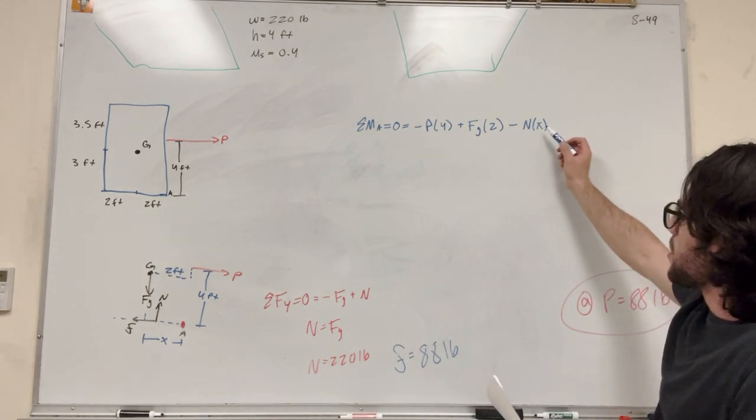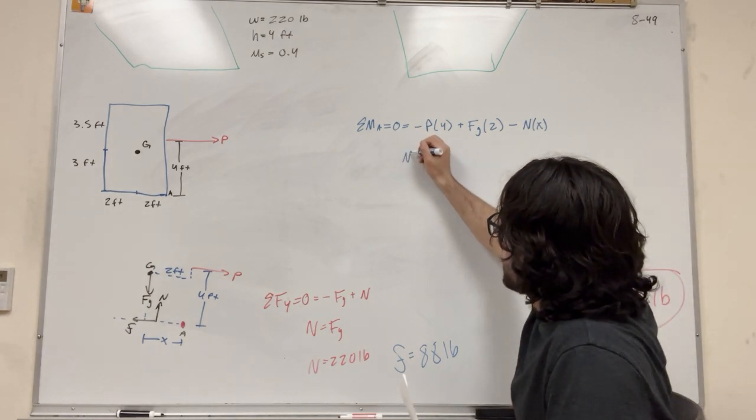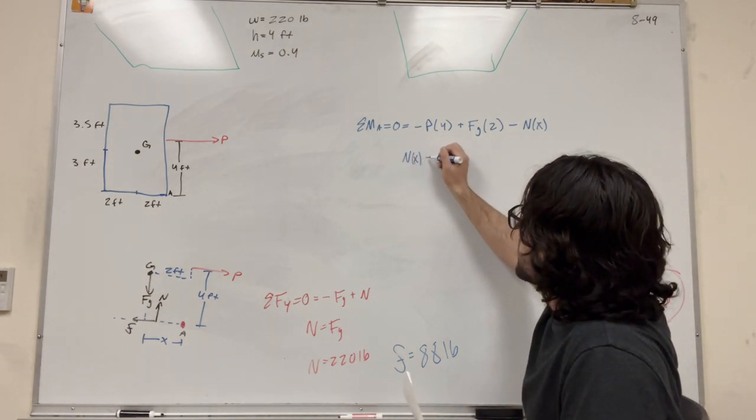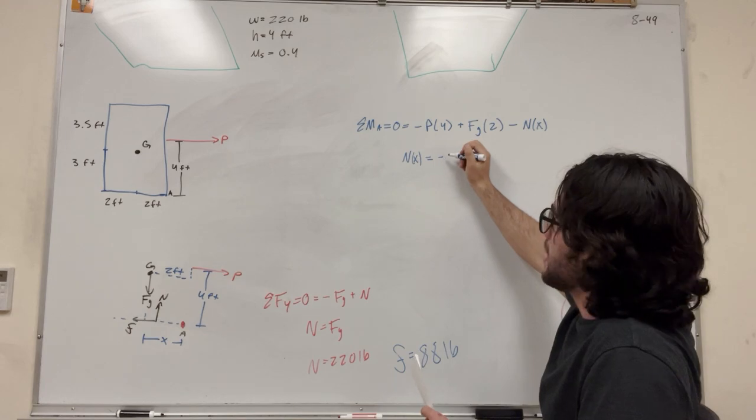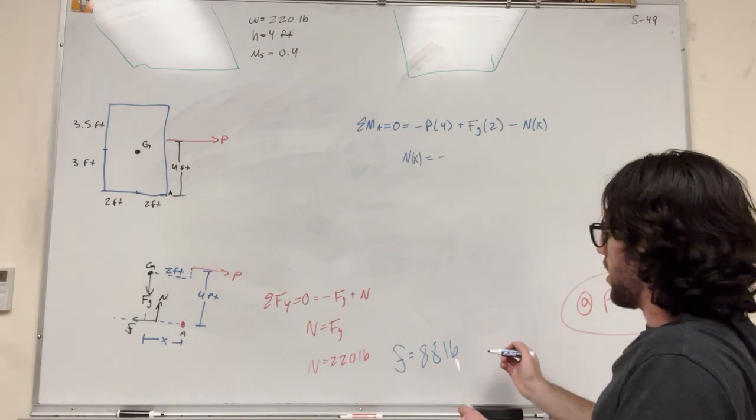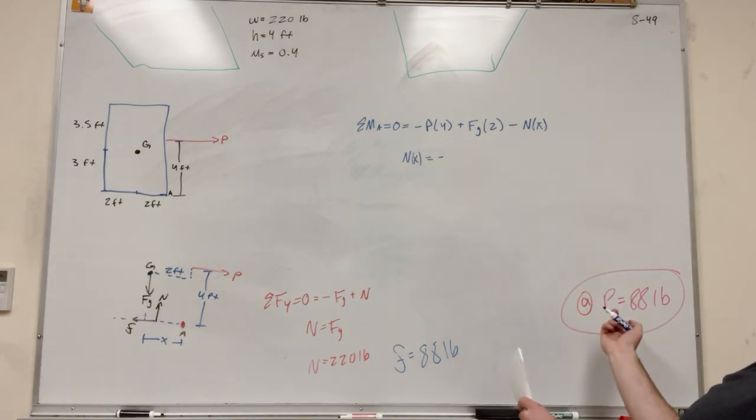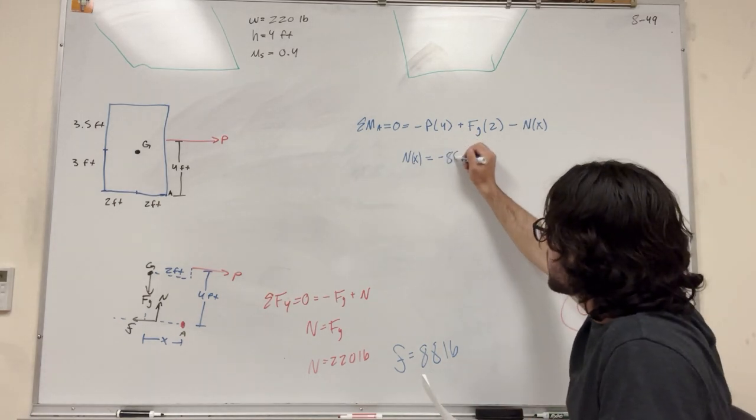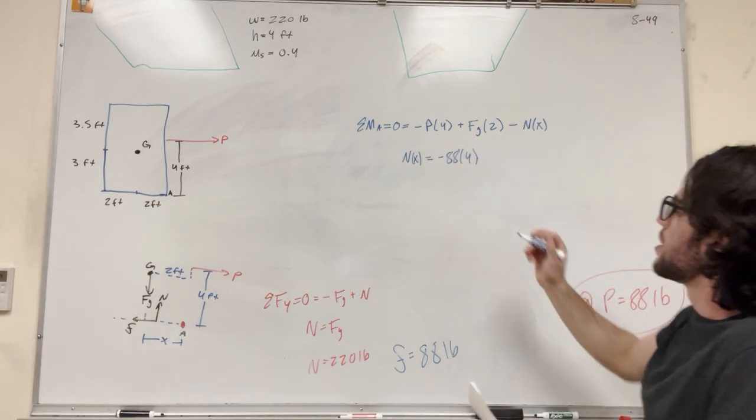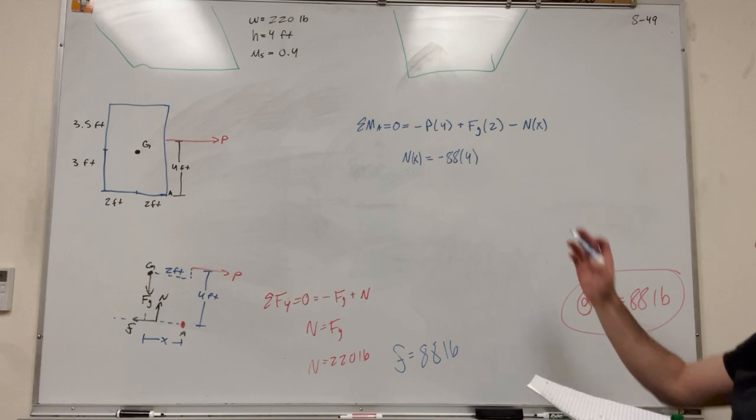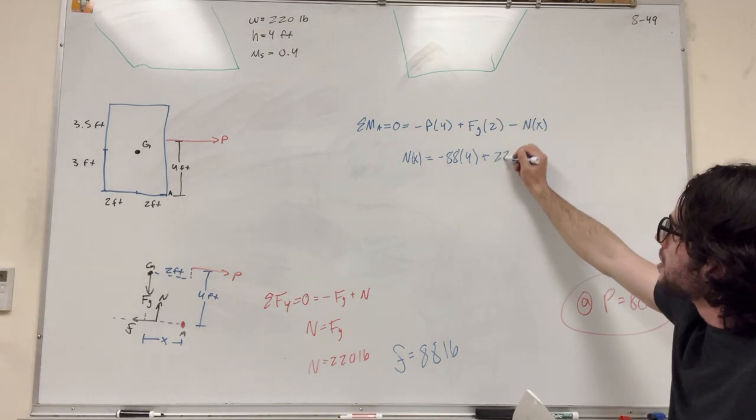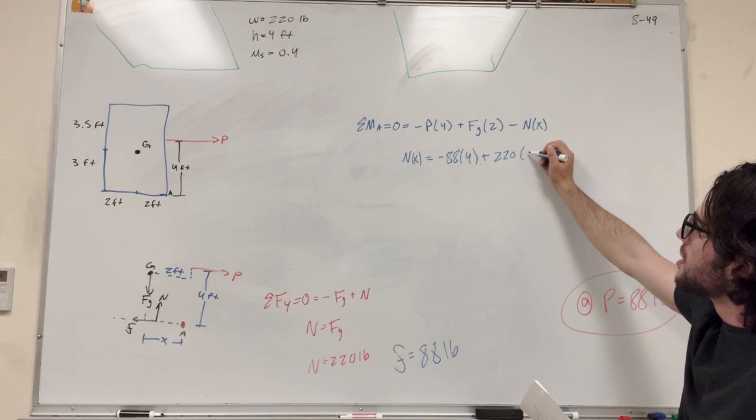So this is our equation. So we're solving for X. So let's go ahead and move that over. So it'll be NX is equal to negative P. So we said we found P already. Yeah, we said P is 88 pounds. So it'll be negative 88 times 4 plus force gravity. So force gravity is its weight. So plus 220 times 2.